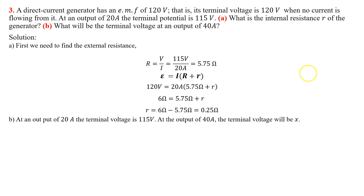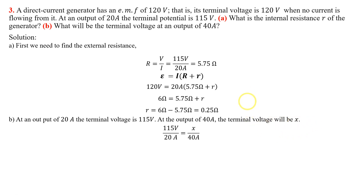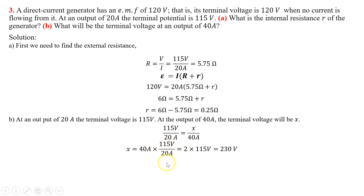For the second part of Question 3, we need the terminal voltage at an output of 40 ampere. We know that at 20 ampere the voltage is 115 volt. Taking the ratio on both sides and rearranging the equation, we find the terminal voltage at 40 ampere to be 230 volt.